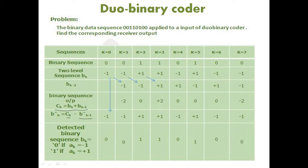At the receiver we subtract the time delay — the operation is ck minus bk minus one — to check whether the detected binary sequence equals the transmitted sequence. Consider the data sequence: double zero, double one, zero one, double zero — an eight-bit sequence applied to a duo binary encoder. Since the problem does not specify a pre-coder, we use the first circuit: duo binary without pre-coder.